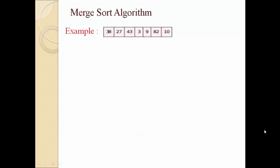Let us discuss Merge Sort Algorithm with one example. Suppose we have a list of random numbers like 38, 27, 43, 3, 9, 82, and 10. As per the Merge Sort Algorithm and the divide and conquer concept, the first step is to divide our list into different parts. We will divide this list into two parts. Here the total number of elements is seven, so the first part will have four elements and the second part will have three elements.